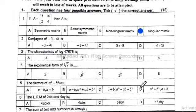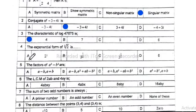Question 2: the conjugate of (−3 − 4i) is (−3 + 4i). Option B is correct. Question 3: the characteristic of log(4.765) is 4. Wait — the characteristic of log(4.765) — option A is correct.